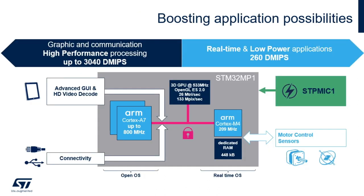Shown here is a top-level view of the STM32 MP1 architecture. On the left side are the dual Cortex-A7s, providing up to 3040 DMIPS of performance when clocked at 800 MHz. This high-performance domain is where Linux or Android would run. The optional 3D GPU in the top middle provides hardware acceleration for advanced graphics user interfaces. On the right-hand side is the Cortex-M4, providing up to 260 DMIPS for time-critical or other offloaded functions. This real-time domain can run bare metal or an RTOS.